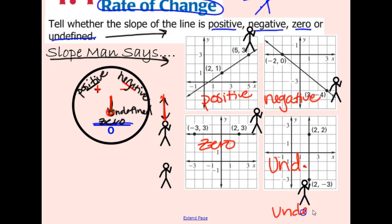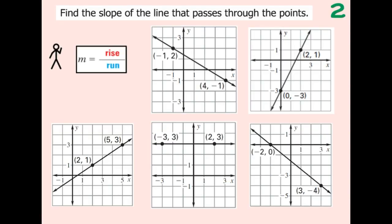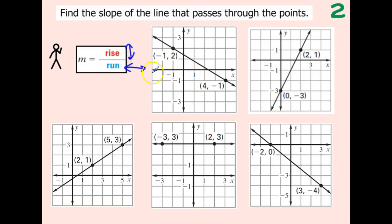If you want to put 'und' you can, otherwise write the whole word: undefined. Moving along, now instead of just telling you whether it's positive or negative, we're going to actually count the exact number. We know that the number two is positive and negative two is negative - those numbers correlate to the lines we've drawn. We're always going to count our slope as rise over run: rise meaning going up and down first, then our run left or right. In math, we use the letter m to represent slope. I wish it was an s, but this is what we have to use.